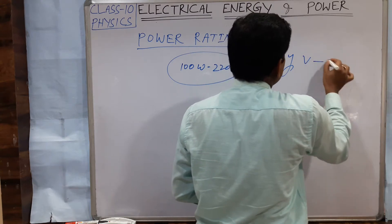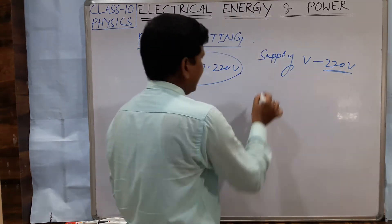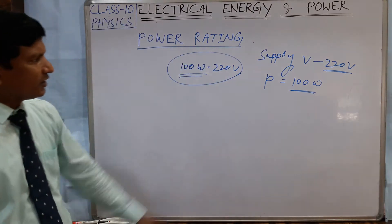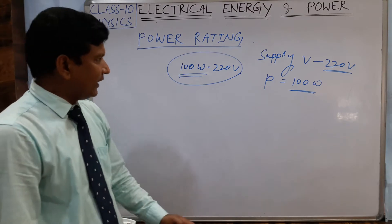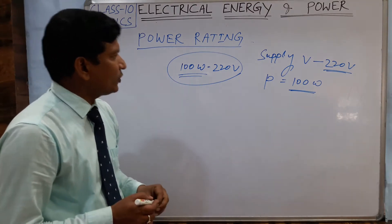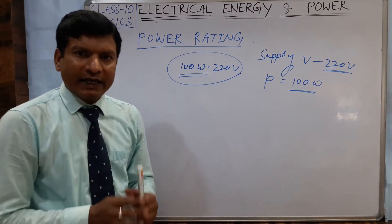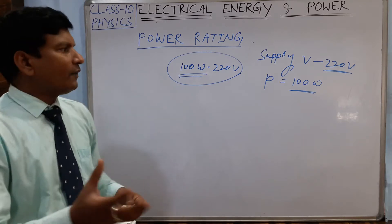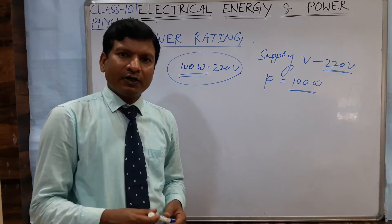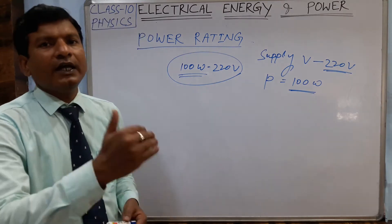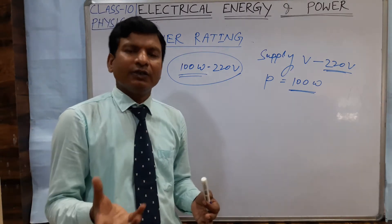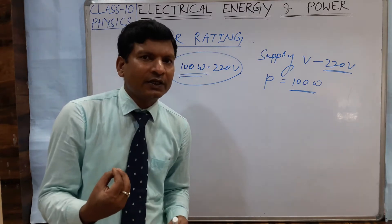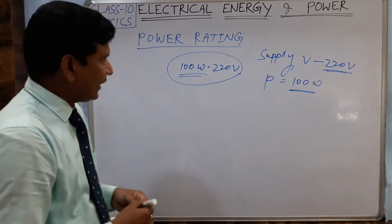When a bulb is marked as 100 watt and 220 volt, it means that when the bulb is lit on a 220 volt supply, the electrical power consumed by the bulb is 100 watt. On the other hand, when the bulb is lit on 220 volt supply, 100 joules of electric energy is converted into light energy or heat energy in one second.